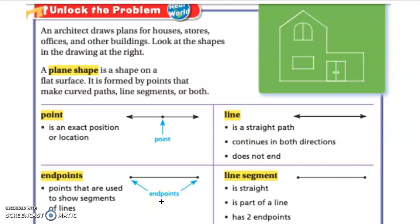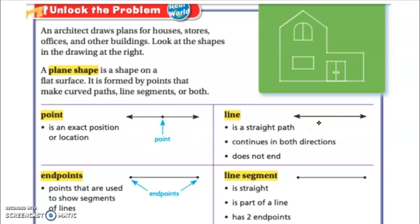When you put two points on a line, they're called endpoints. There's one point here and one point here. These are called endpoints; they're used to show a segment or a part of a line. Then we have a line segment, which is this piece of the line. It's straight, it's only one part, and it has two endpoints.